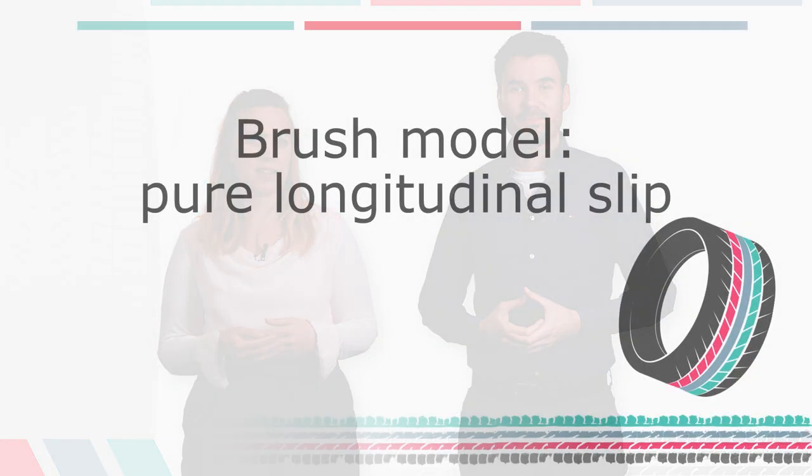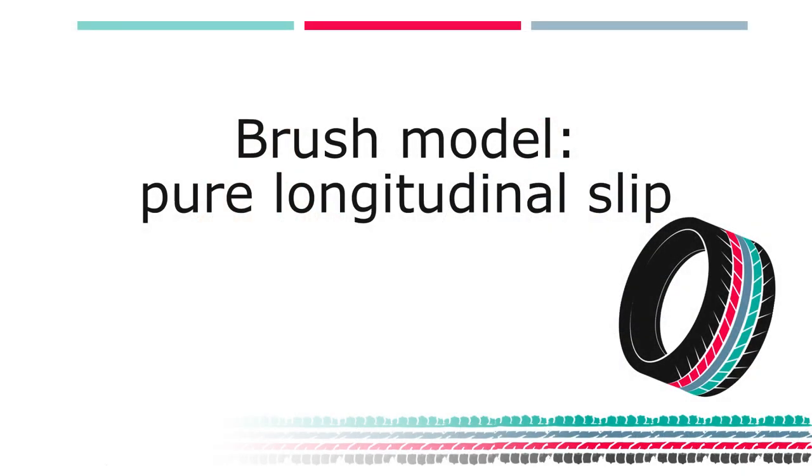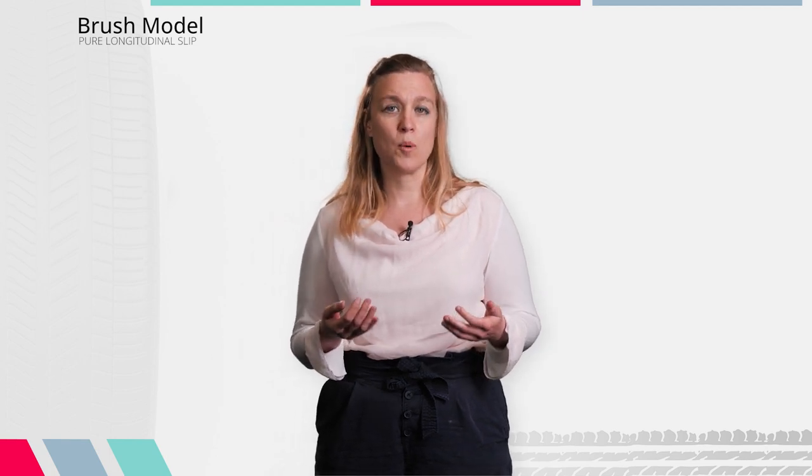We will now take a closer look into the horizontal force transmission of tires. In this lecture, we are looking into the longitudinal tire forces that are required for accelerating or braking a vehicle. We again use a simple physical substitute model to describe the mechanisms that enable the force transmission from the wheel to the road. This substitute model is commonly known as the Brush tire model.